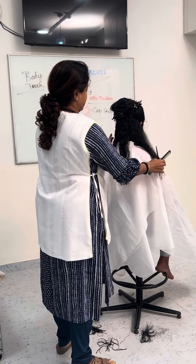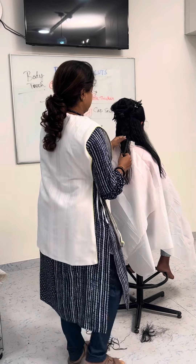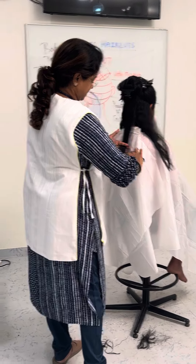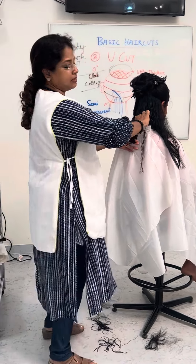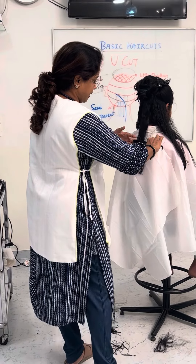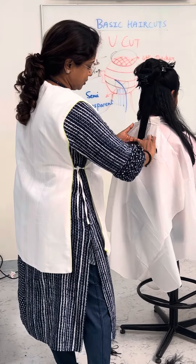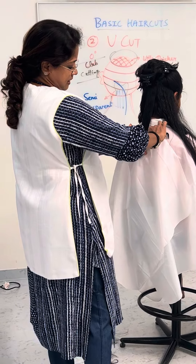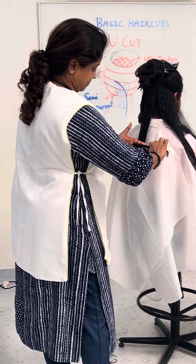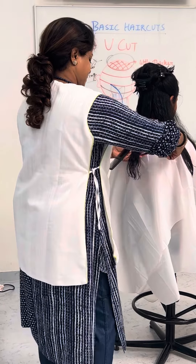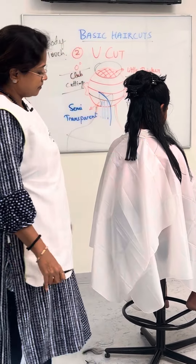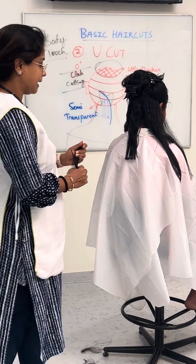Straight verse, steady verse. Chin down. You should be able to see the guideline. Guideline ke thoda neechhe kaat karna hai for the second section — you need to cut just slightly below the guideline. See the guideline, then chop it off. So this is your new red line.